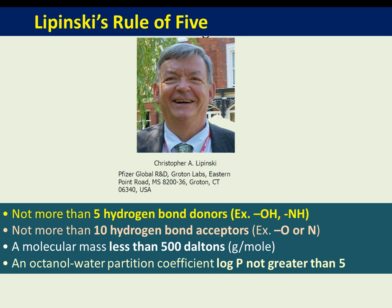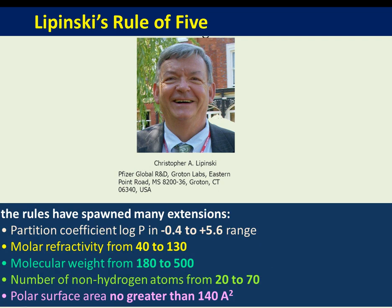These rules don't apply to natural products and some biologicals. Over time, the rules were fine-tuned: log P value within a range of 0.4 to 5.6, molar refractivity between 40 to 130, molecular weight from 180 to 500, number of non-hydrogen atoms between 20 to 70, and polar surface area not more than 140 Ångström squared. These physicochemical constants can be calculated using software, and databases can be screened using free online or offline tools.